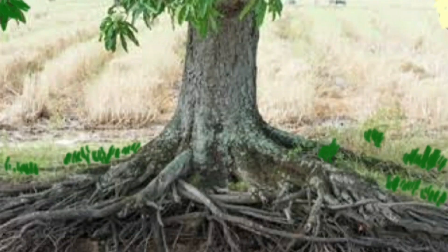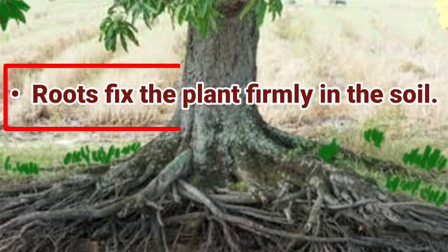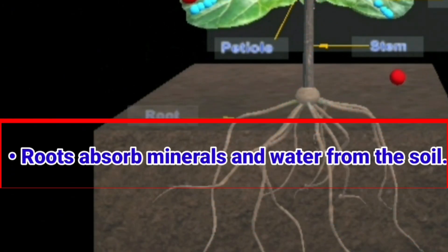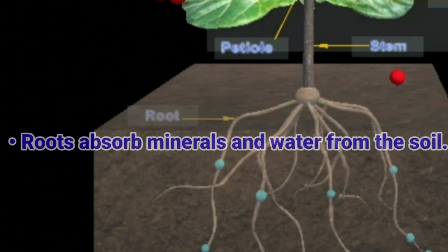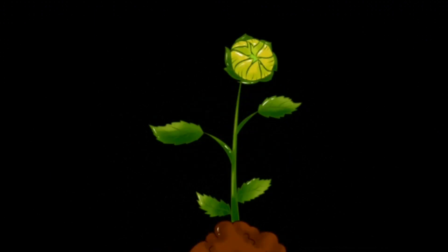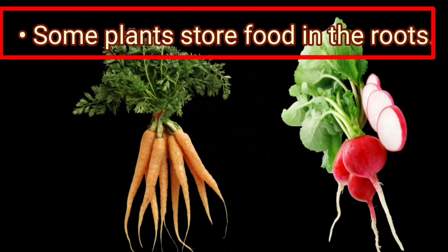What are the functions of the root? The roots fix the plant firmly to the soil. This ensures that plants do not get uprooted even when there are heavy rains or strong winds. Roots have hair-like structures called root hairs. They absorb minerals and water from the soil and send them to different parts of the plant. This helps the plant to grow. Some plants such as carrots, radish and beetroot store extra food in their roots.